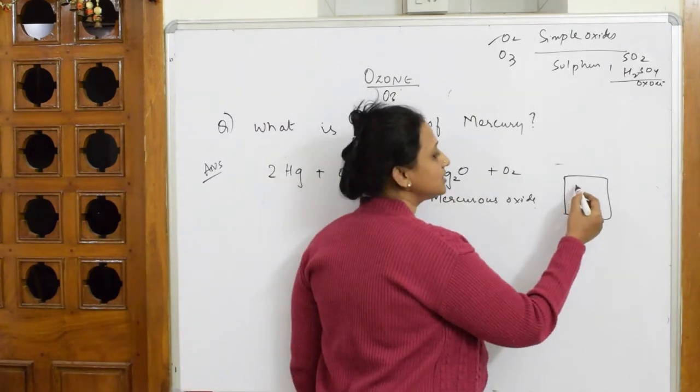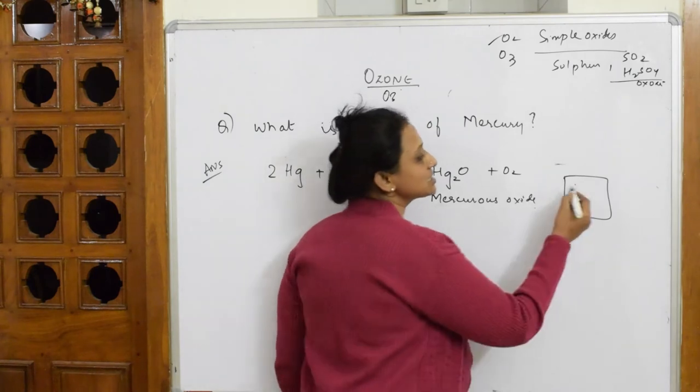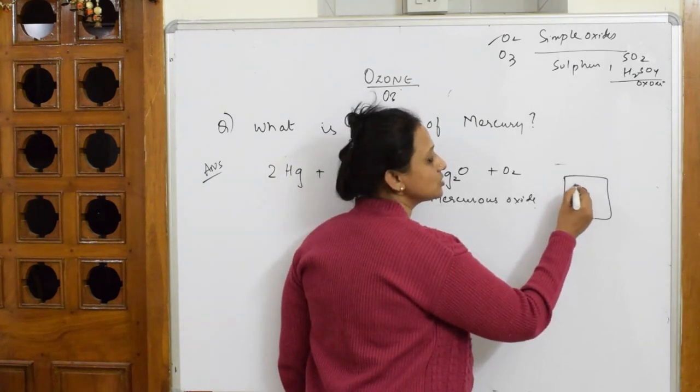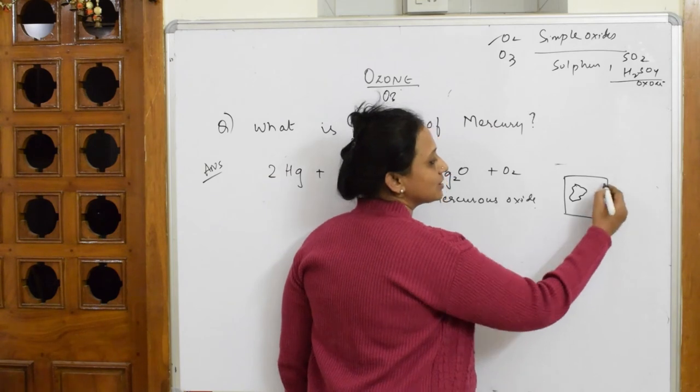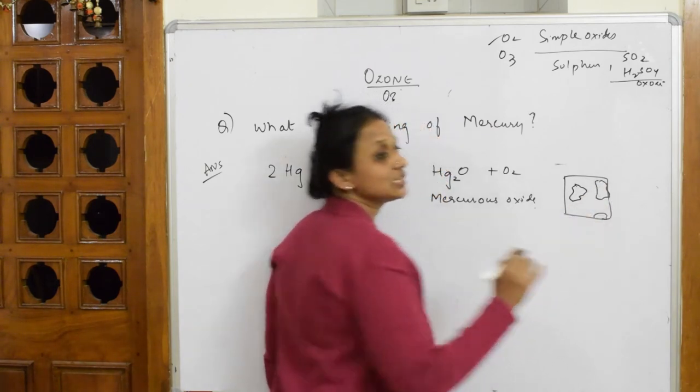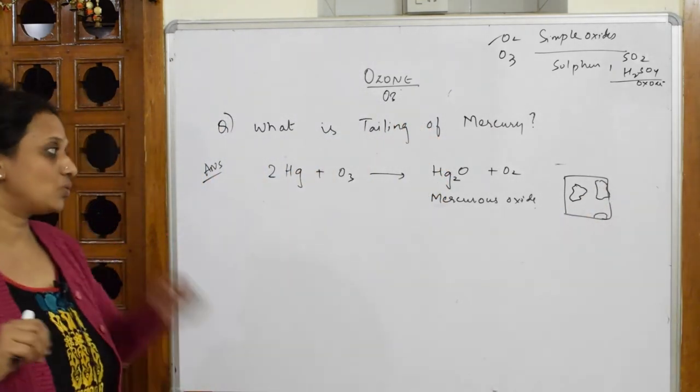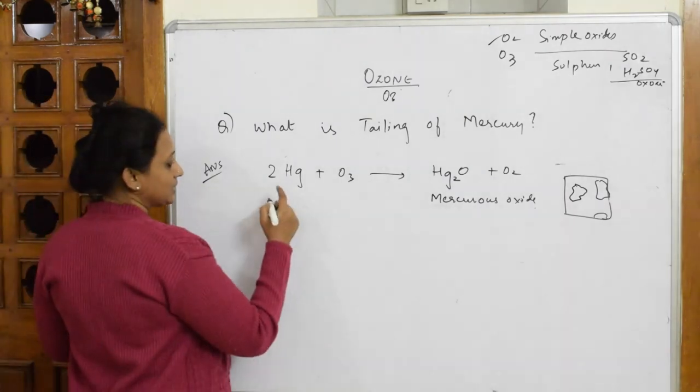It sticks to the walls of the glass tube like this, in this way. This is called tailing of mercury. Let us write in words the definition.